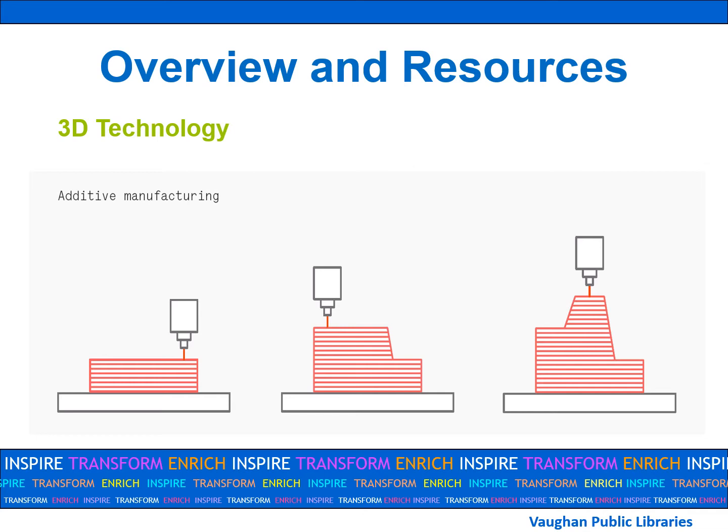3D printing describes the process where a 3D object is created from a digital file. The digital file is then imported and formatted into the printer's software. The object is created through additive manufacturing. Plastic is fed through an extruder, which melts it at a very hot temperature. The melted plastic is extruded in very thin layers, laid one on top of the other until the final shape is realized. The plastic then cools to form one solid object.